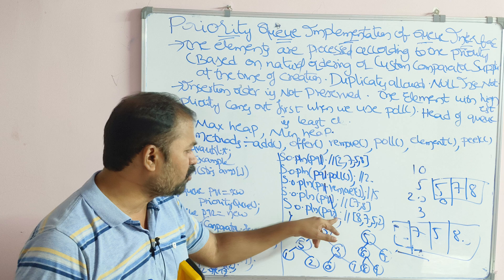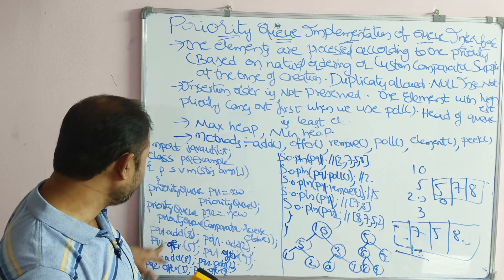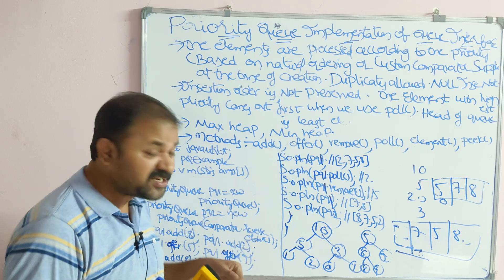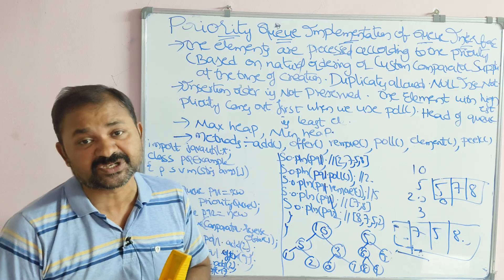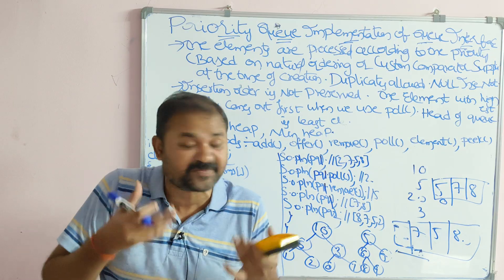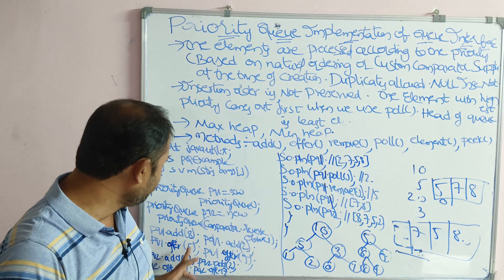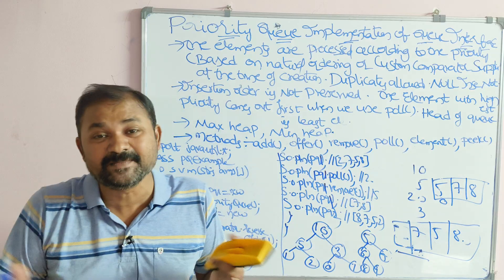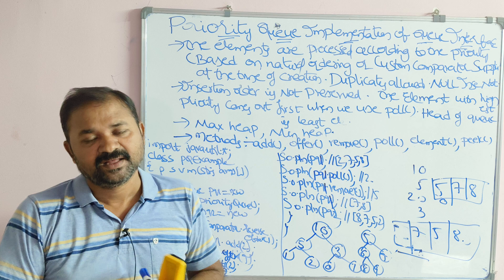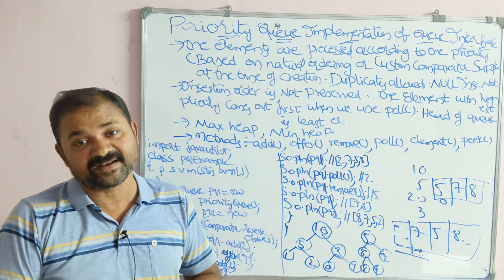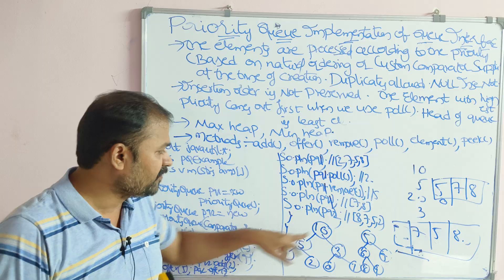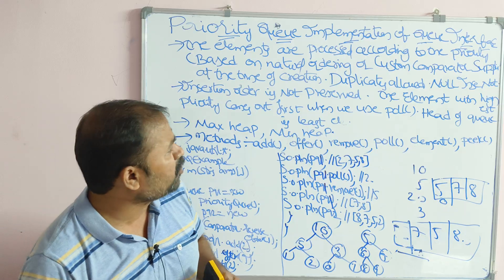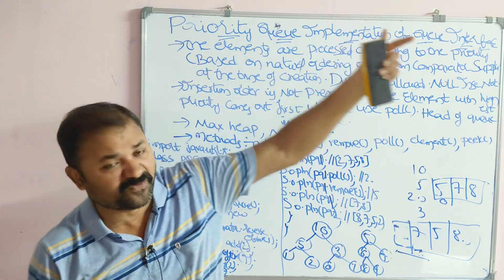For pq2, which uses Comparator.reverseOrder(), the same elements 8, 2, 5, 7 are inserted. With reverse order, the highest element gets the highest priority. Out of 8, 2, 5, 7, the biggest element is 8, so 8 gets the highest priority, followed by 7, then 5, then 2. The output of pq2 will be [8, 7, 5, 2]. This is how we perform operations on the Priority Queue, which is a class that implements the Queue interface.